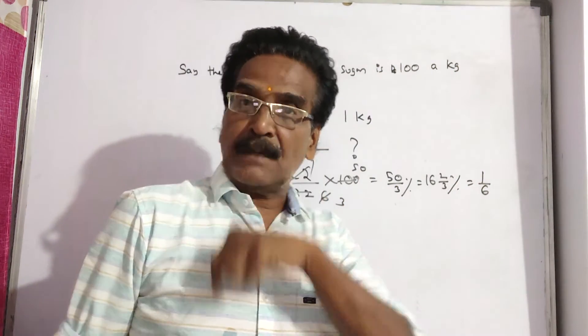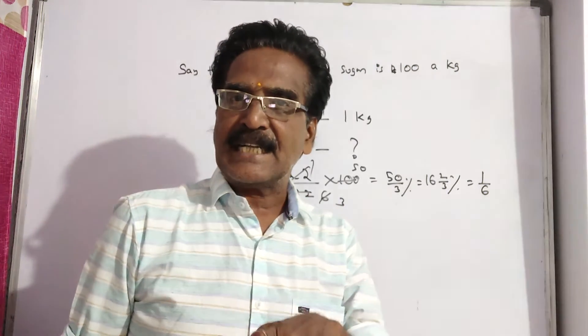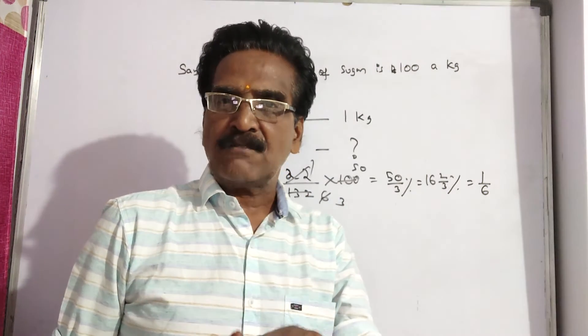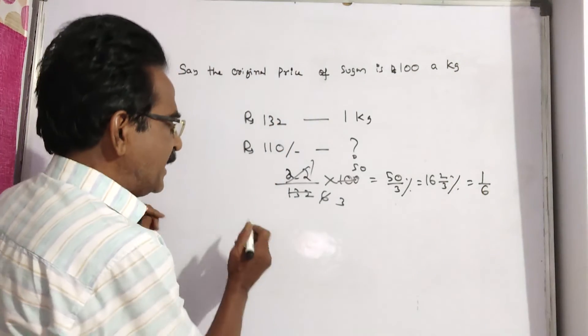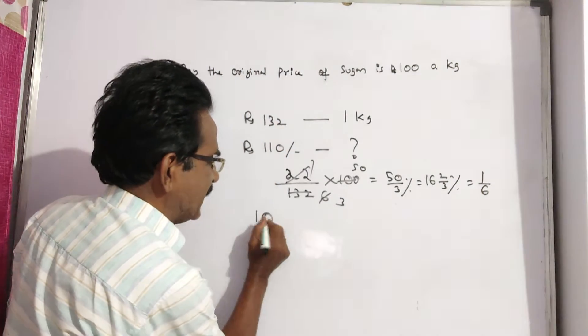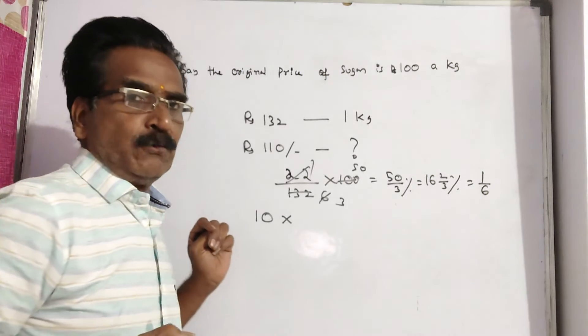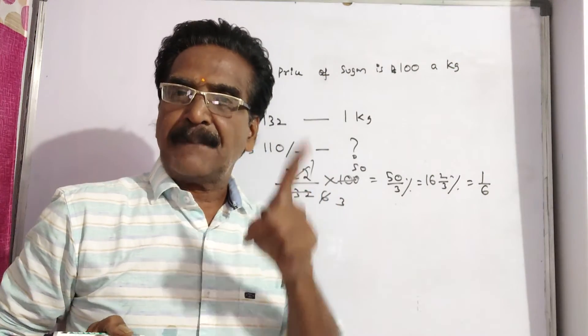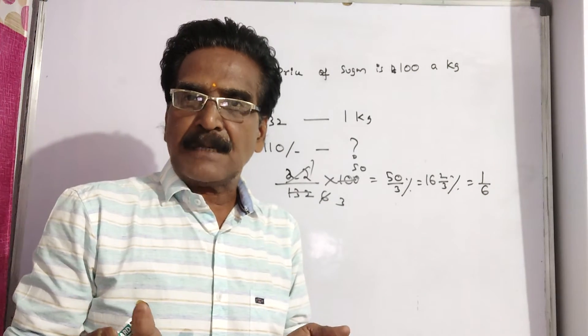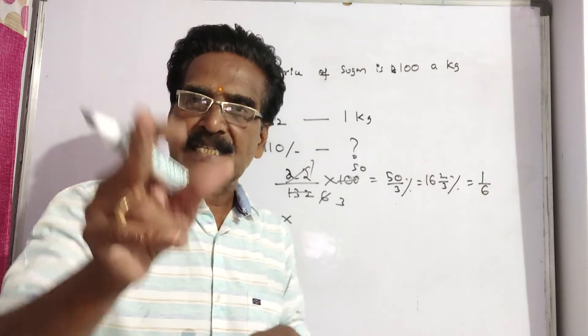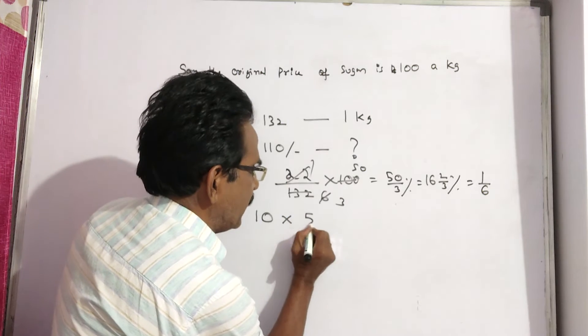They have to reduce by 1 by 6, which means their present consumption must be 1 minus 1 by 6, which is 5 by 6 of the earlier consumption. Earlier consumption is 10 kgs.